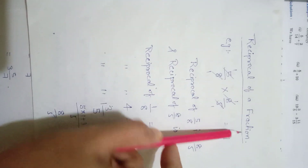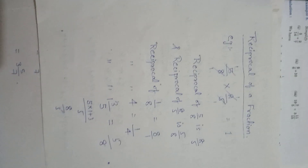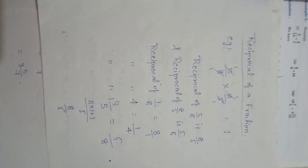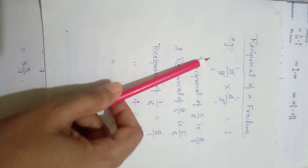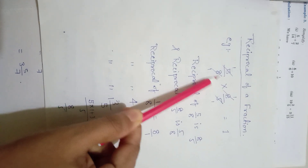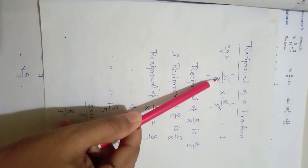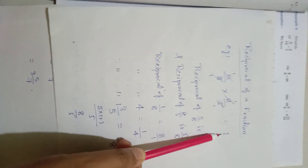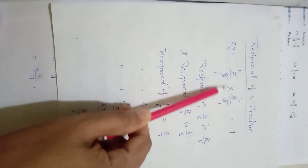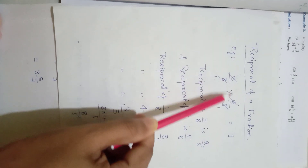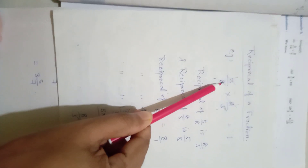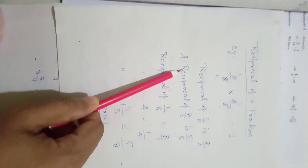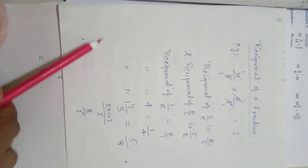Reciprocal of a fraction: when two fractions' product is one, each fraction is the reciprocal of the other. For example, 5 by 8 and 8 by 5 — when multiplying, 5 and 5 cancel, 8 and 8 cancel, and the answer is one. So this fraction's reciprocal is this and this fraction's reciprocal is this. Reciprocal of 5 by 8 is 8 by 5, and reciprocal of 8 by 5 is 5 by 8.